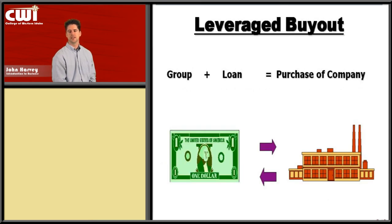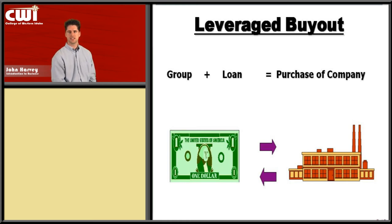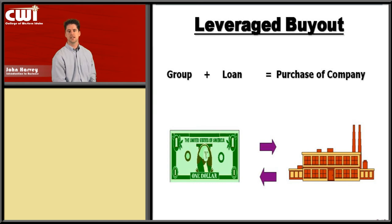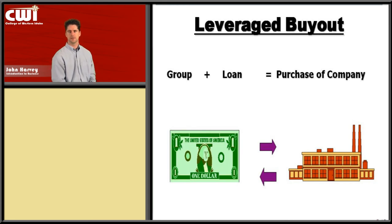A leveraged buyout is an important concept. This is where a business is running as a C corporation with stock out there, and employees will try to buy up as much stock as they can to take over the business. It's called a leveraged buyout because they take out a loan to buy all of that stock. They collect as a group, contact a bank, say they want to buy the business and will take out a loan to do it. They then purchase the majority of shares, becoming the majority owner.